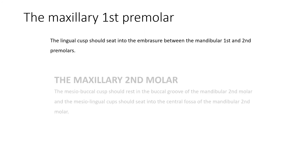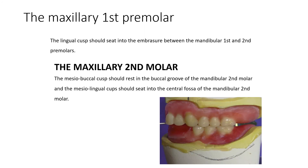Between the two premolars, the lingual cusp of the maxillary first premolar should be set in the embrasure between the mandibular first premolar and the mandibular second premolar. For the maxillary second molar, the mesiobuccal cusp should rest on the buccal developmental groove of the mandibular second molar, and the mesiolingual cusp in the central fossa. This is the normal occlusal relation.